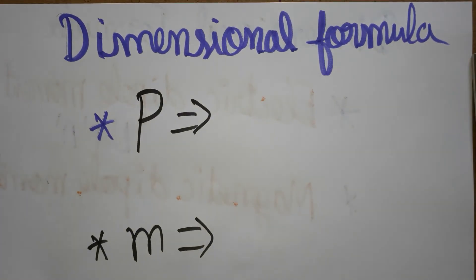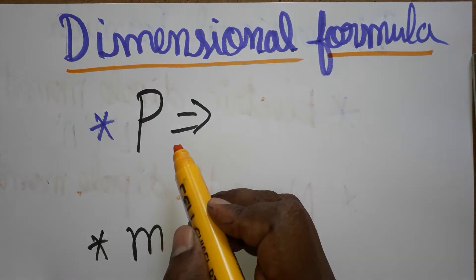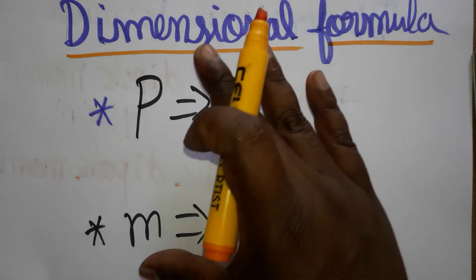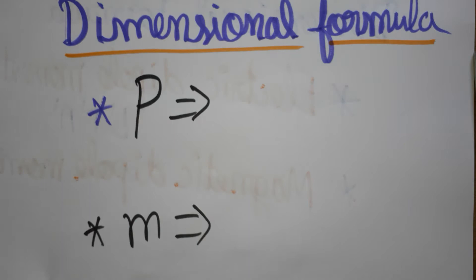Today we are going to see dimensional formula for magnetic dipole moment and electric dipole moment. P is electric dipole moment, M is magnetic dipole moment. We are going to see what is the dimension of this and also what is the definition of electric dipole and magnetic dipole. If you like my channel,